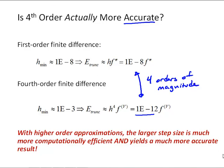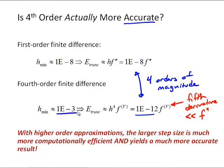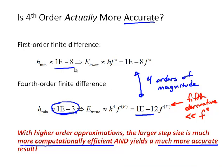Another side note: the truncation error is proportional to the fifth derivative, and the fifth derivative is going to be much less than the second derivative. So with a higher order approximation, that larger step size of 10⁻³ is much more accurate. It's also going to be much more computationally efficient — it will take far fewer steps using a step size of 10⁻³ versus 10⁻⁸ to take the derivative of a function over some range. We have two major benefits of going to the higher order differentiation scheme: one, it's more computationally efficient; and two, it yields a much more accurate result.